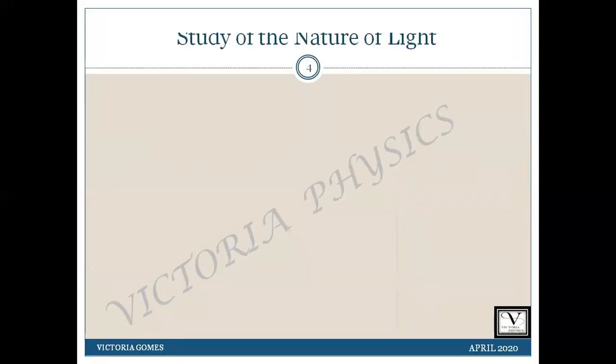So let us begin our study on the nature of light. Light has two different natures. Sometimes it behaves like a particle, sometimes it behaves like a wave. That is, it exhibits a dual nature. Various theories about the nature of light have been proposed from time to time.